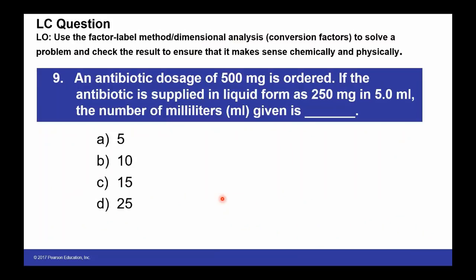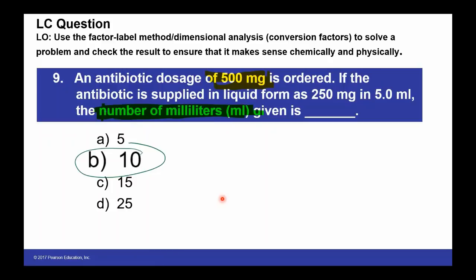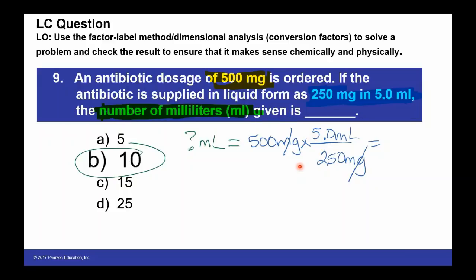Pause the video and try to solve this problem on your own. An antibiotic dosage of 500 milligrams is ordered. If this antibiotic is supplied in liquid form as 250 milligrams in 5 milliliters, how many milliliters should be given? The answer is 10 milliliters. Starting with 500 milligrams times 5.0 milliliters per 250 milligrams — milliliters on top so milligrams cancel — we end up with 10 milliliters. Hopefully this has helped you understand the remaining of unit one.